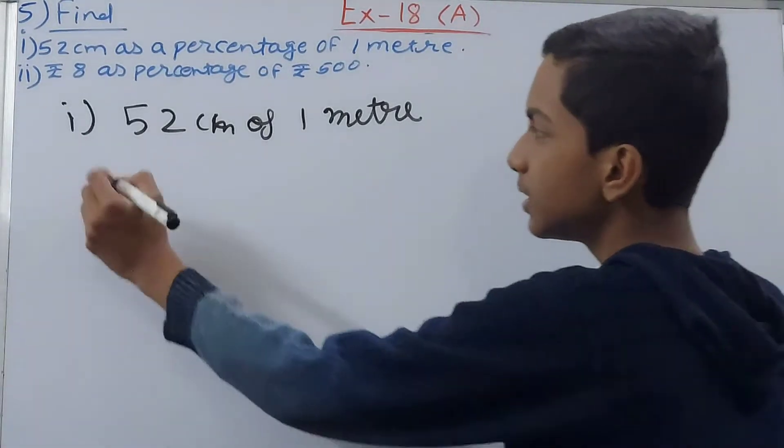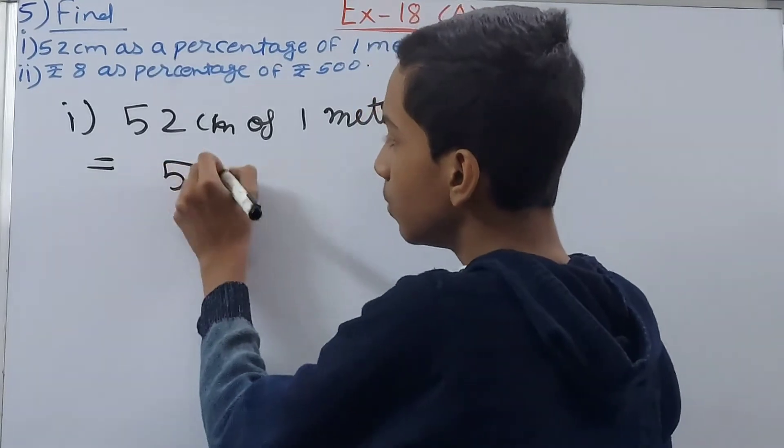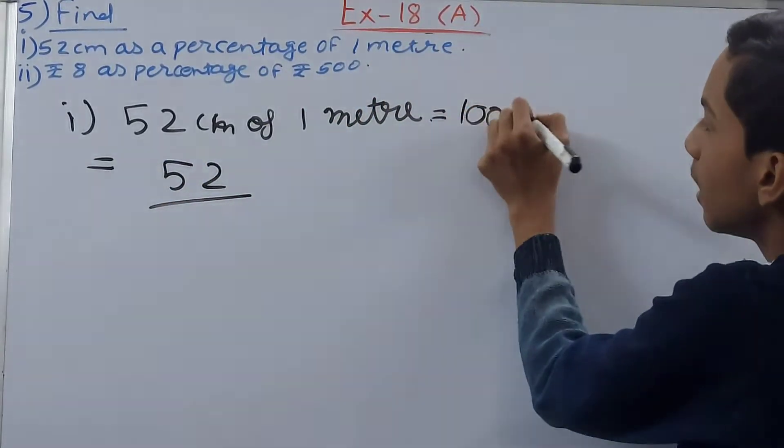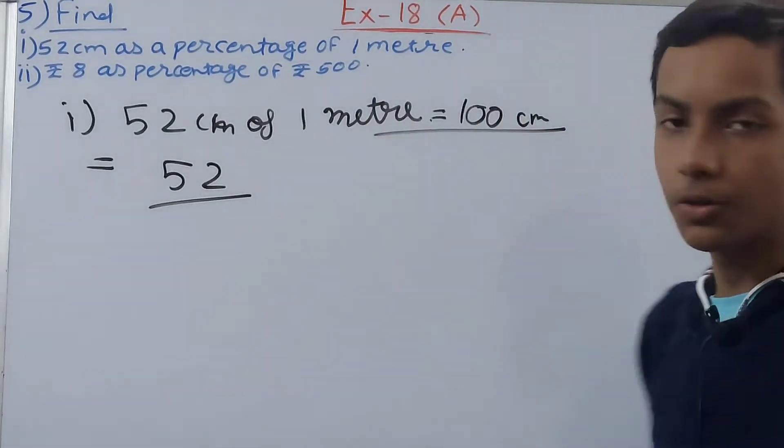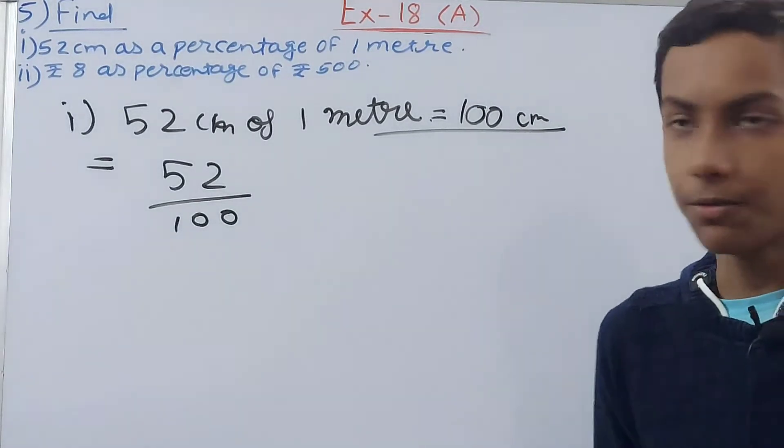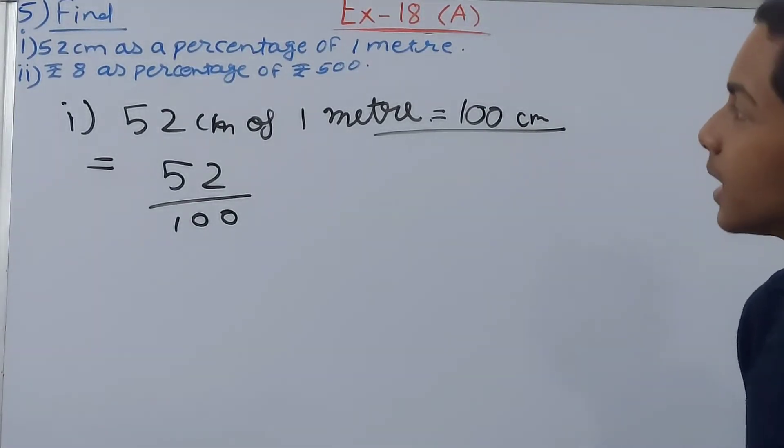So this can be written as 52 upon, and we know 1 meter equals to how many centimeters? 100 centimeters. So 52 upon 100. Now we have to find the percentage.